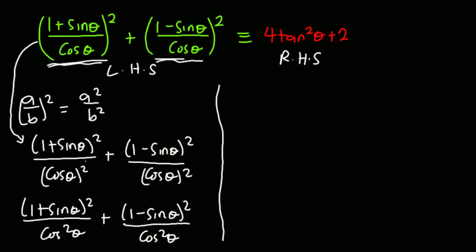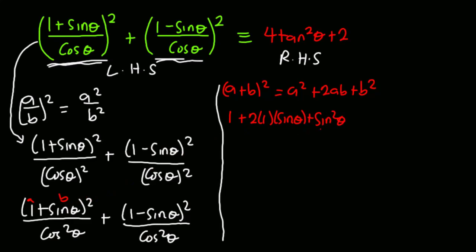I'm going to expand (1 + sinθ)² using the identity (a + b)² = a² + 2ab + b², where a = 1 and b = sinθ. This gives 1² + 2(1)(sinθ) + sin²θ, which is 1 + 2sinθ + sin²θ, all divided by cos²θ.